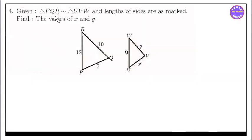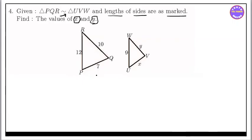Triangle BQR is given as similar to triangle UVW. We need to find the values of x and y from the sides. Building on the fact that triangle BQR is similar to triangle UVW, we set up our ratios.